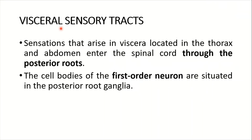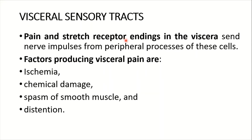Now a few words about the visceral sensory tract. Sensations that arise in viscera located in the thorax and abdomen enter the spinal cord through the posterior roots. The cell bodies of the first-order neurons are in the posterior root ganglia. Pain and stretch receptor endings in the viscera send nerve impulses via peripheral processes of these cells. Factors that produce visceral pain are different from those producing cutaneous pain.